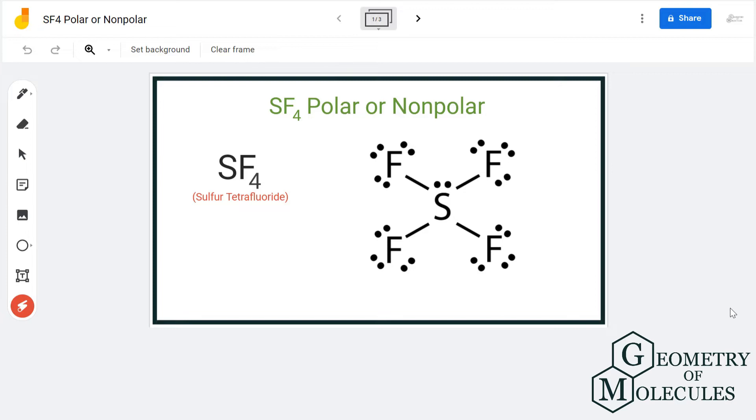Hi guys, today in this video we are going to determine the polarity of SF₄ molecule. It's a chemical formula for sulfur tetrafluoride because it is made up of one sulfur atom and four fluorine atoms.